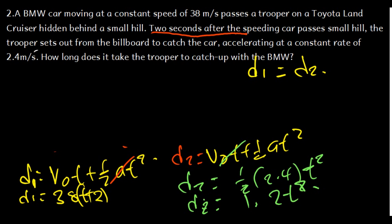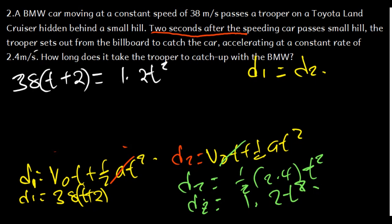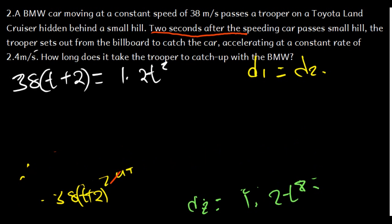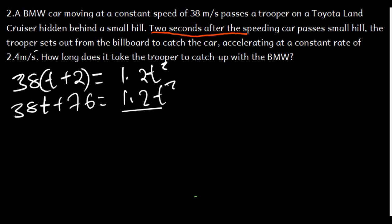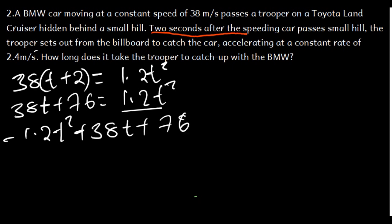Setting D1 = D2: 38(T + 2) = 1.2T². Expanding the left side: 38T + 76 = 1.2T². Shifting everything to one side: −1.2T² + 38T + 76 = 0. We have arrived at a quadratic equation.